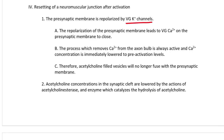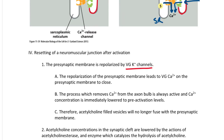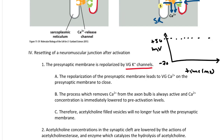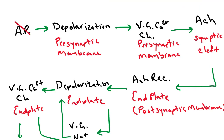Voltage-gated potassium channels repolarize the membrane after the peak of the action potential. The repolarization of the presynaptic membrane causes voltage-gated calcium channels on the presynaptic membrane to close. Once the action potential is gone, the membrane is no longer depolarized, so the voltage-gated calcium channels are no longer activated.